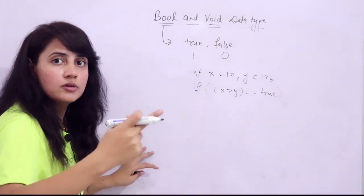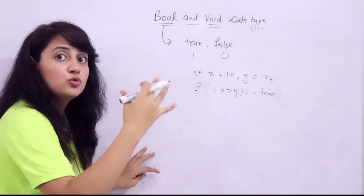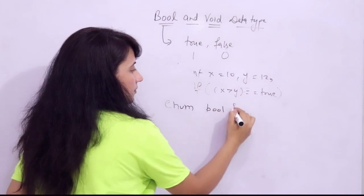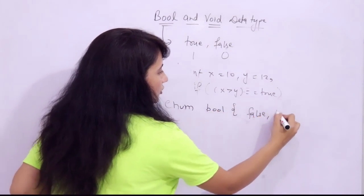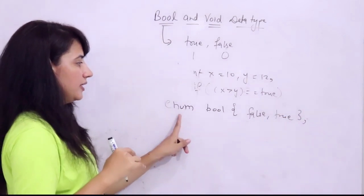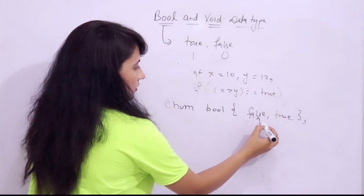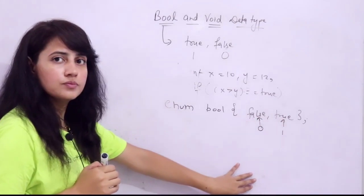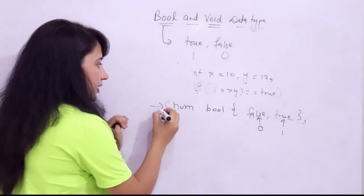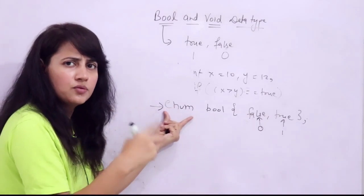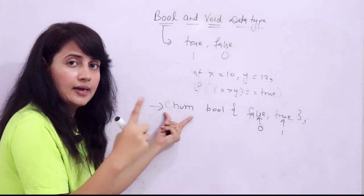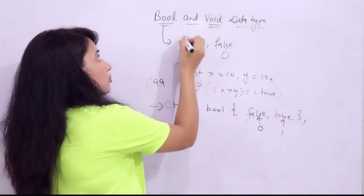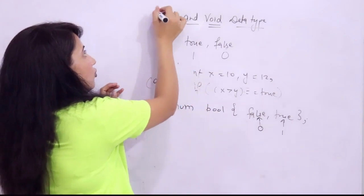Until C99, bool was implemented using the enum data type. You would write: enum bool { false, true }; By default, enum associates false with 0 and true with 1, allowing you to use false or true in your program. Now in C99 and C++, bool is a built-in data type and you can use it directly.